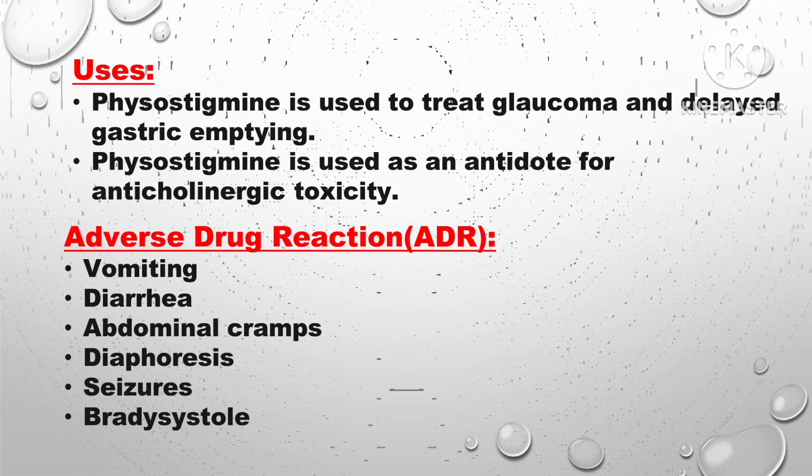Physostigmine is used as an antidote for anticholinergic toxicity. Adverse drug reactions include vomiting, diarrhea, abdominal cramps, miosis, and bradycardia.